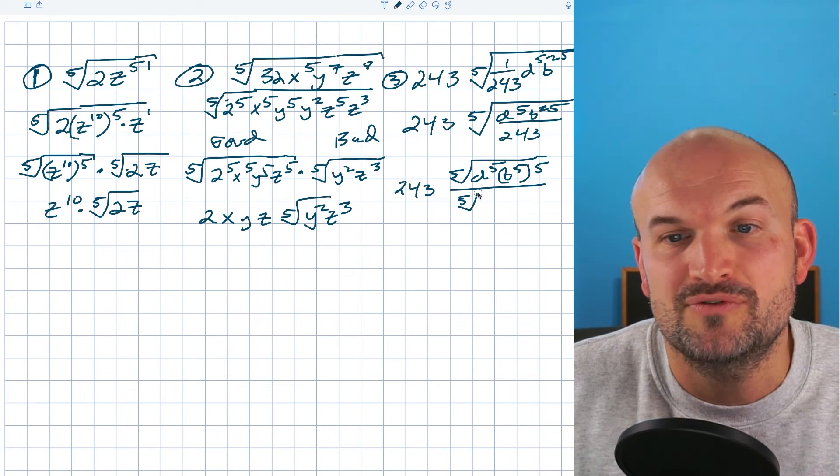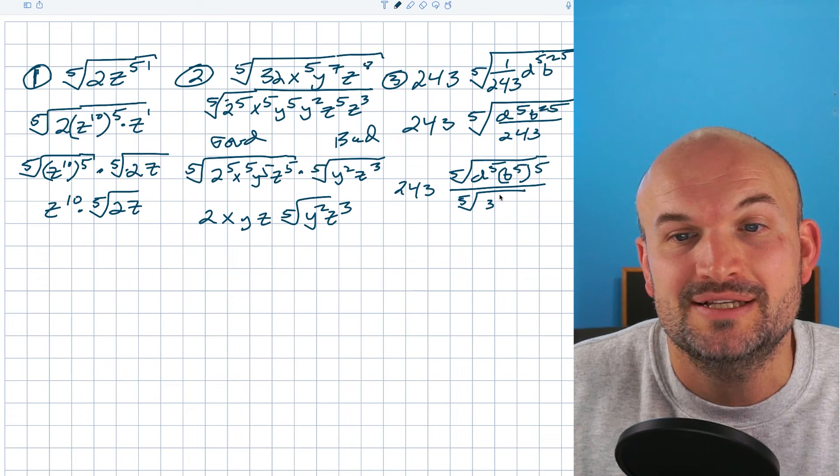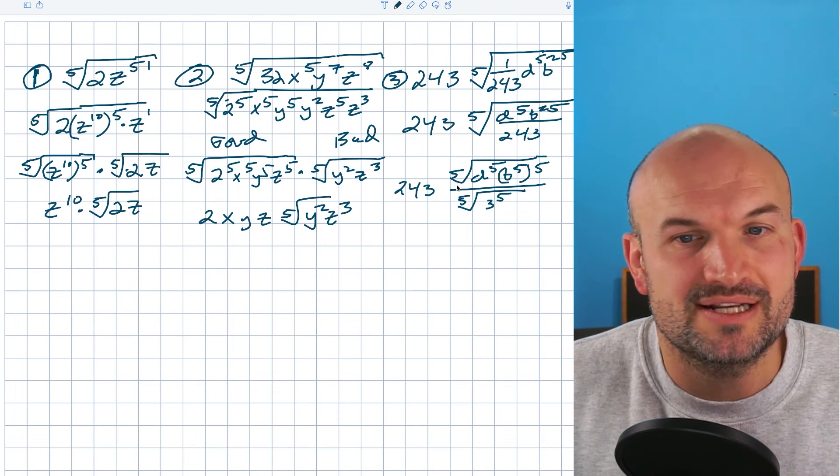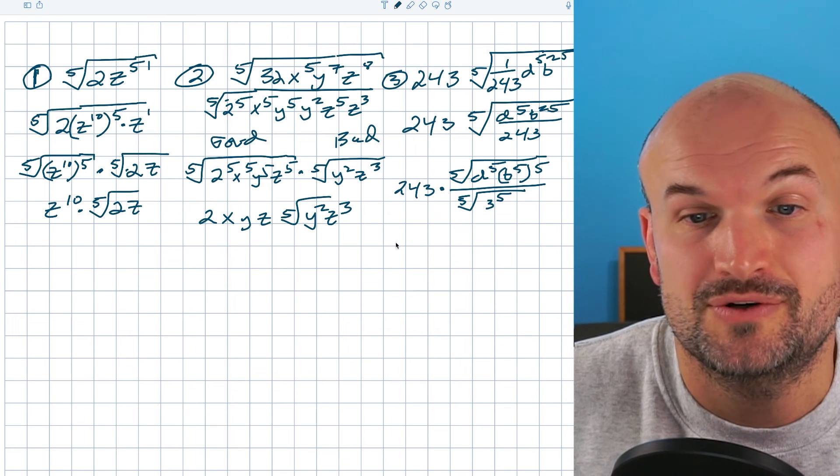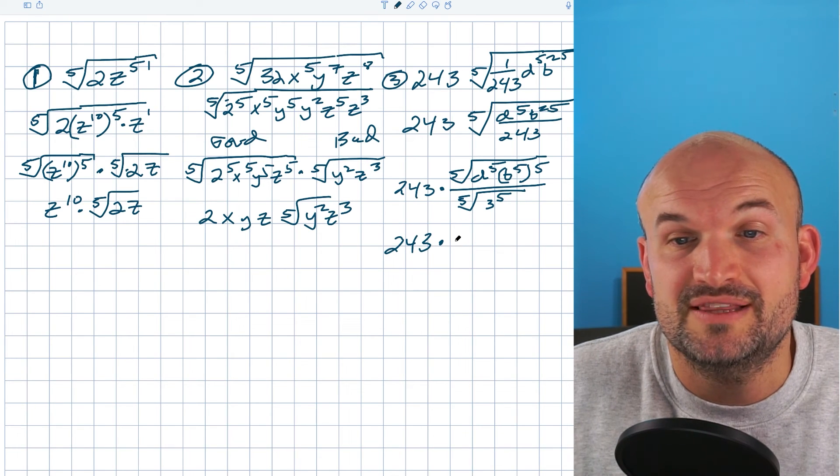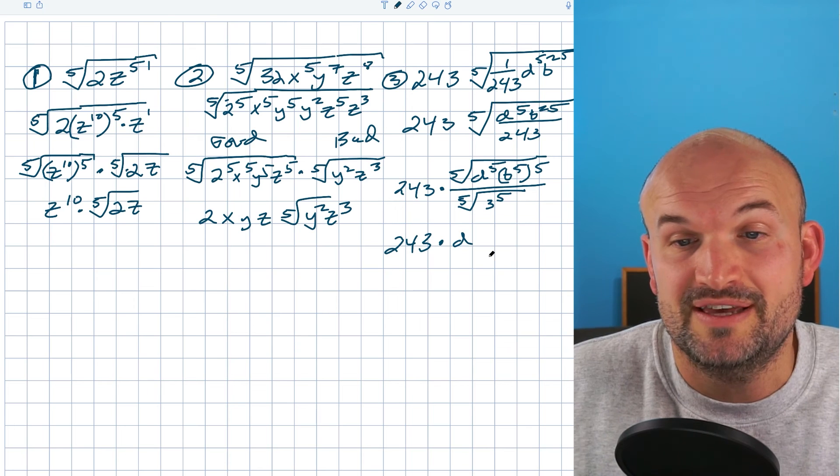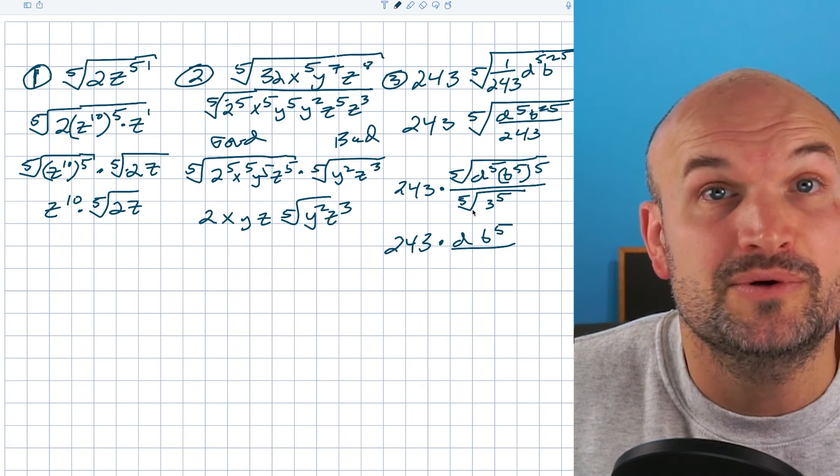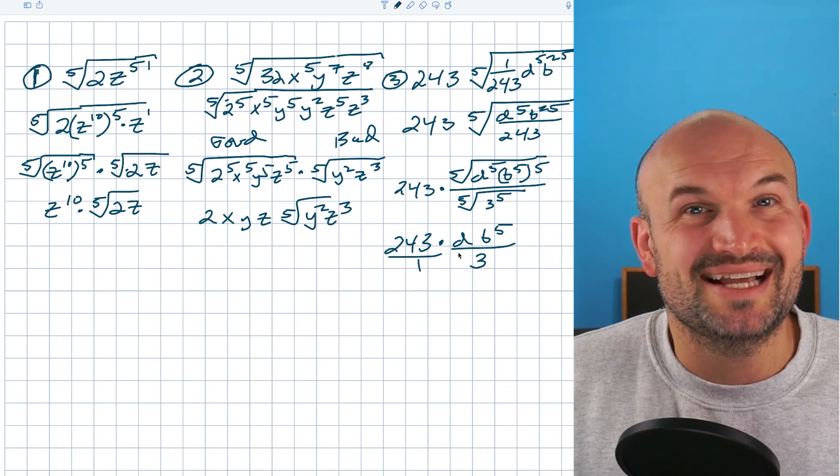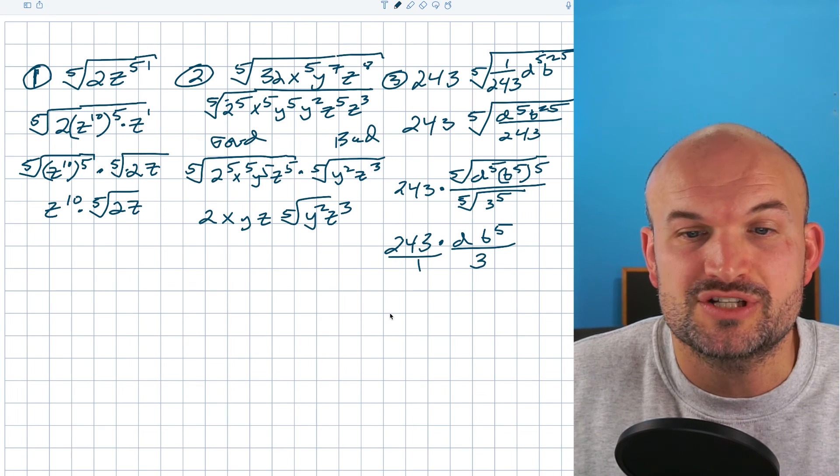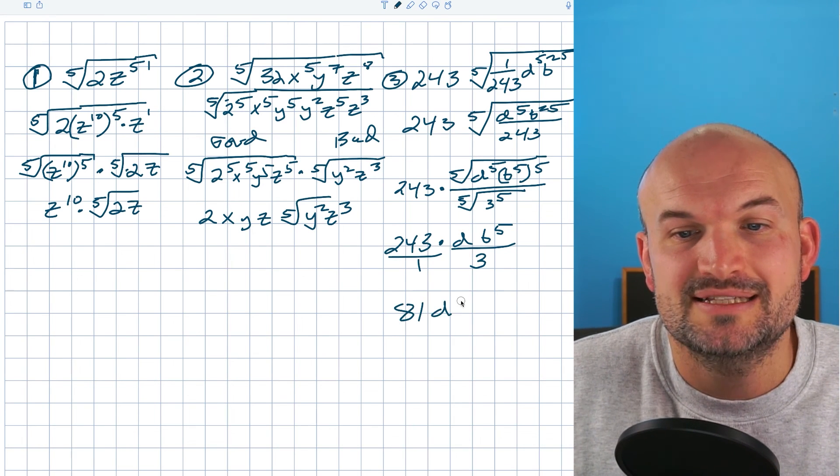All right, so now let's go ahead and simplify. And remember, everything is being multiplied by 243. So now let's go and simplify what I have here. So it's 243. The fifth root of d to the fifth is going to be a d. The fifth root of b to the fifth is going to be b to the fifth. And then the fifth root of 3 to the fifth is going to be a 3. Now remember, this 243 is in the numerator. So I can divide the 3 into 243, which is going to give me 81d times b to the fifth.